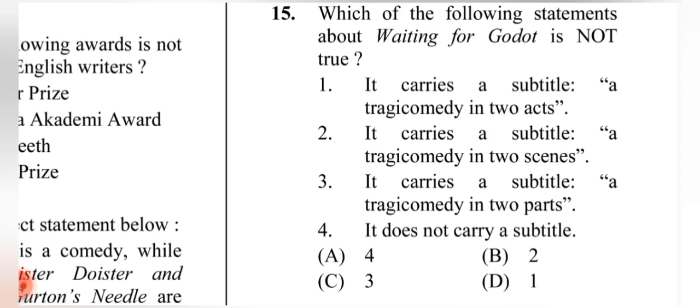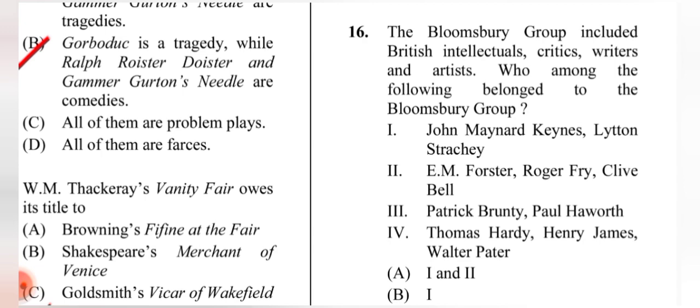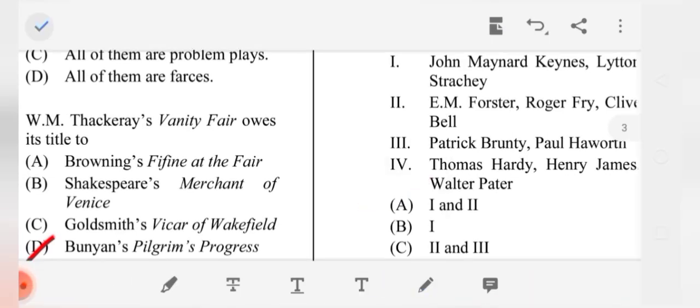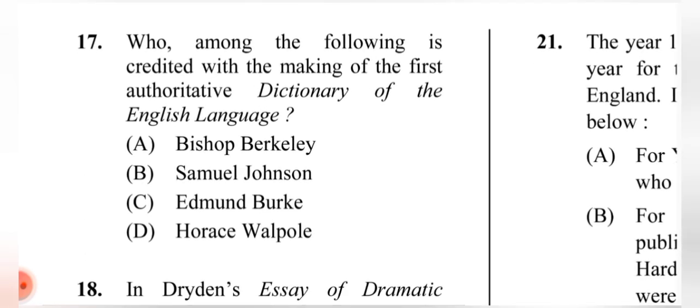Question 15: Which statement about 'Waiting for Godot' is NOT true? This question has some errors according to my research, so marks were given to all candidates. Question 16: The Bloomsbury Group included British intellectuals, critics, writers, and artists. Who among the following belongs to it? The correct answer is (A) options 1 and 2 — John Maynard Keynes, Lytton Strachey, EM Forster, Roger Fry, Clive Bell.